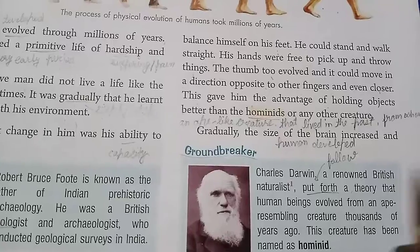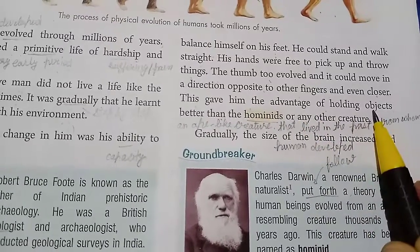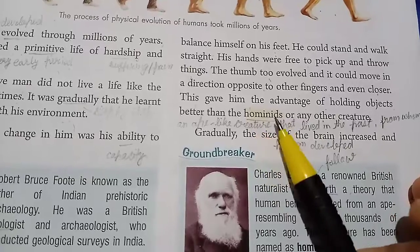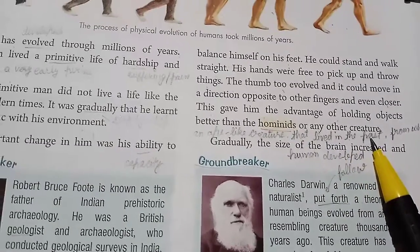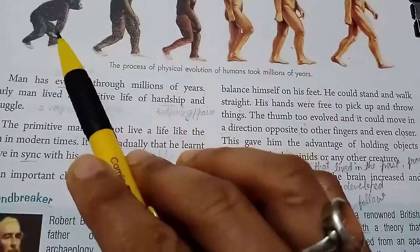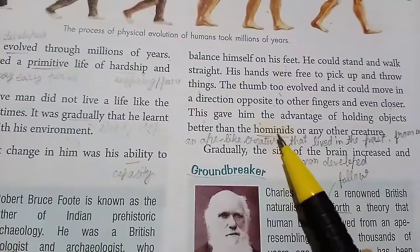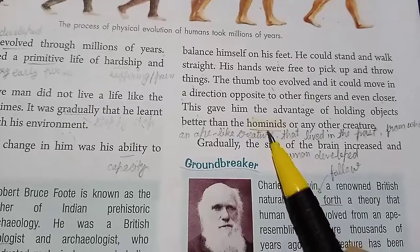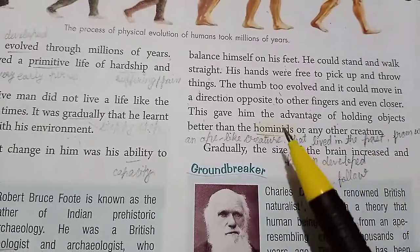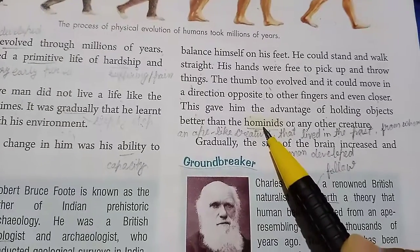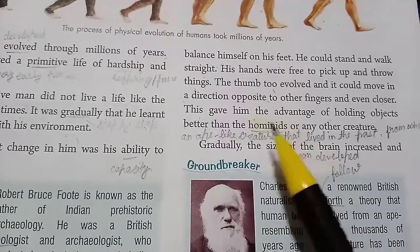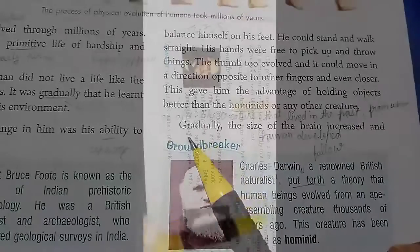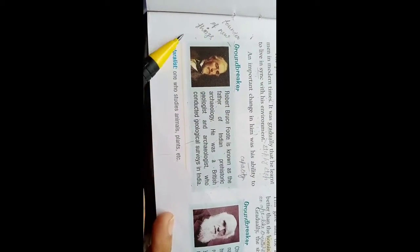Jab usko apne hand ka proper istemal karna aa gaya to usko cheezein pakadne mein aasaani hogi. Hominids — hominids means an ape-like creature that lived in the past — yaani ki jab early man is ape ki tarah tha to is position ko we call it hominids. Jab wo hominids tha, to wo juk kar chalta tha aur apne haathon ko chalne ke liye use karta tha — yaani ki apne haathon ka proper istemal karna usko nahi aata tha.